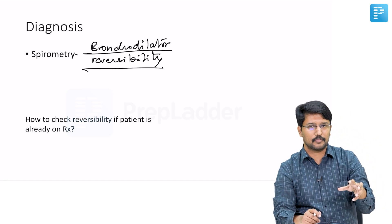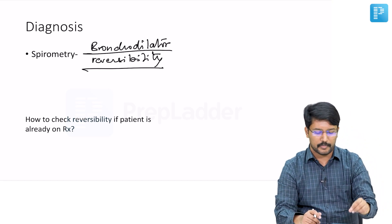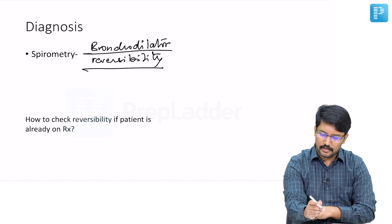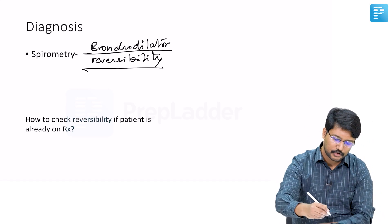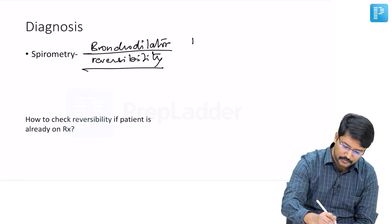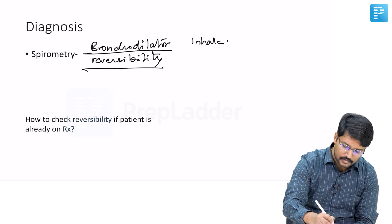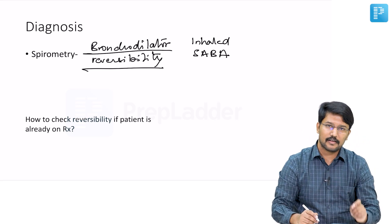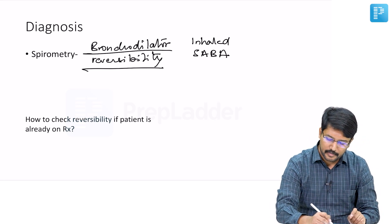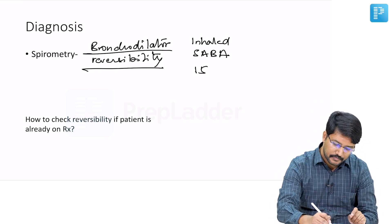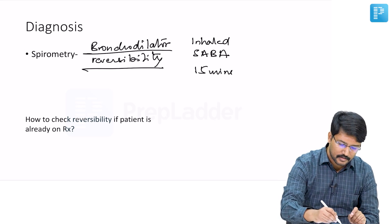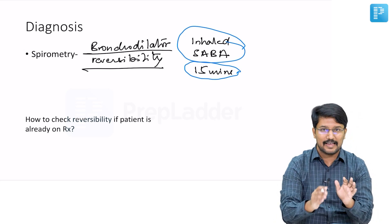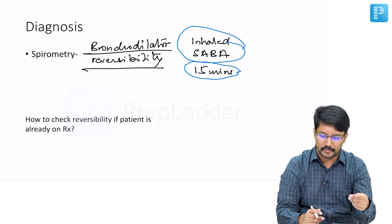Whenever there is evidence of bronchoconstriction or air flow limitation on spirometry, we subject those patients to inhaled short-acting beta agonists. Inhaled SABA duration is 15 minutes, and when we reassess after 15 minutes—remember, all these are critical MCQ points—